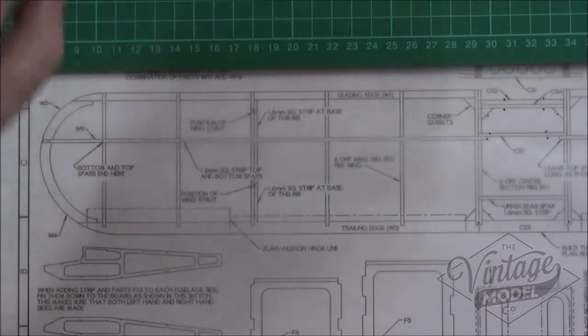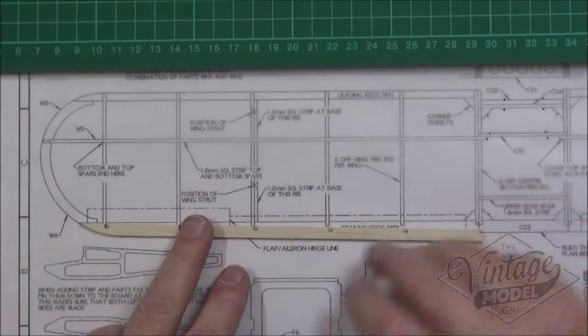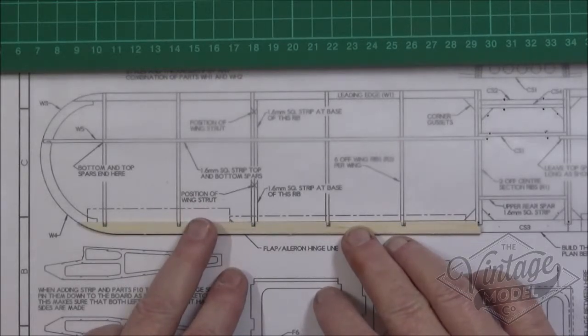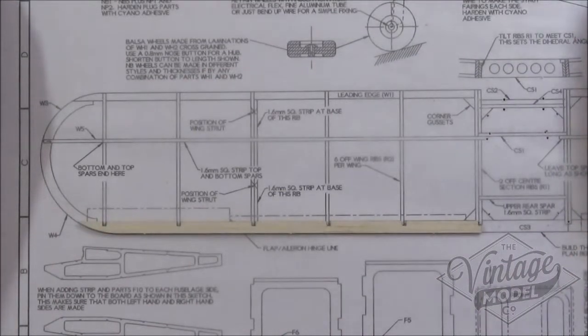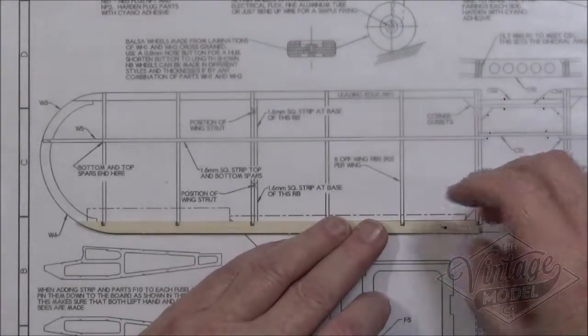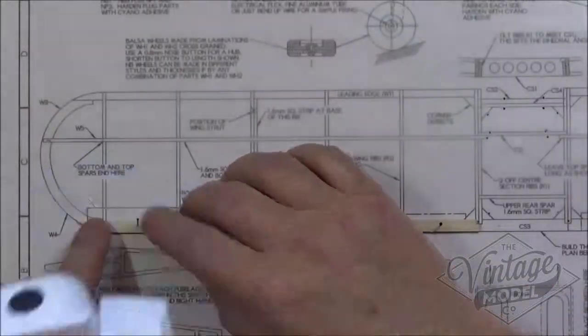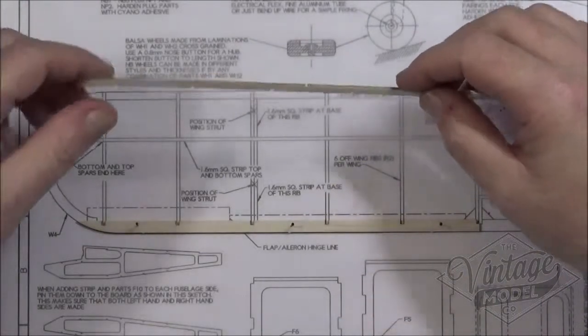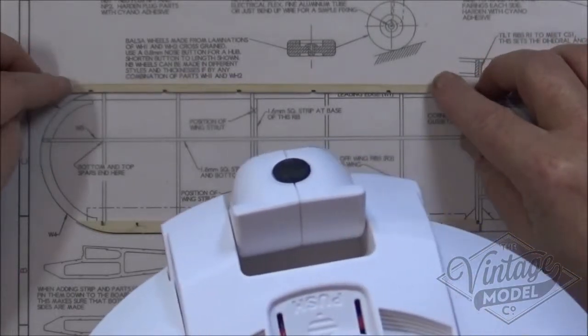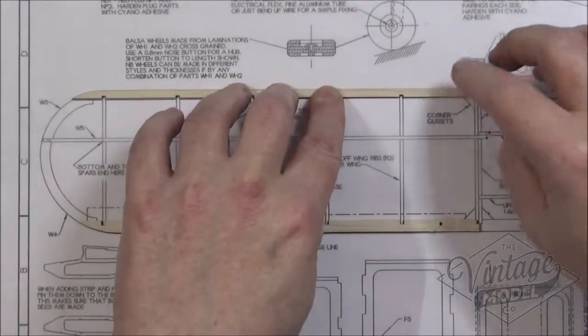The first thing to do is to pin down W2 and line it all up. Because it's quite a wide piece I'm going to use my really thin pins to pin through the balsa wood. And then we need to pin down W1, which I'm not going to pin through because it's the thinner stuff.